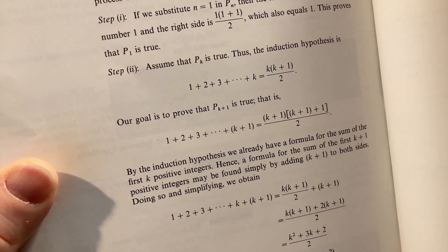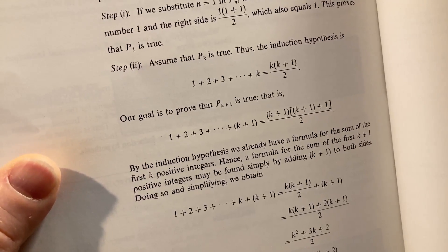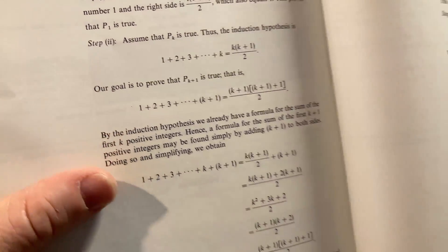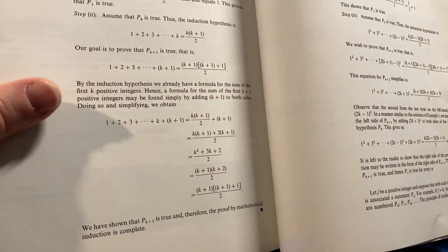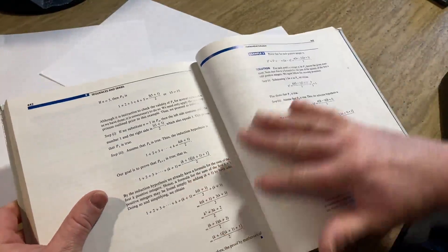So they add k plus 1 to both sides of the equation. And they end up with that. And they perform the addition. And they show the second step. That P sub k plus 1 is true. So if you've seen this before, it's very routine.